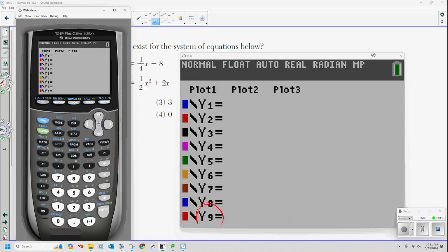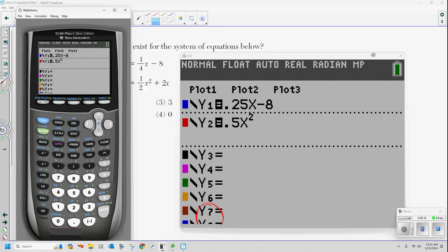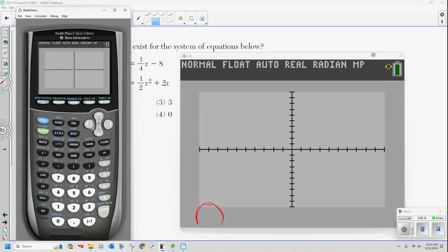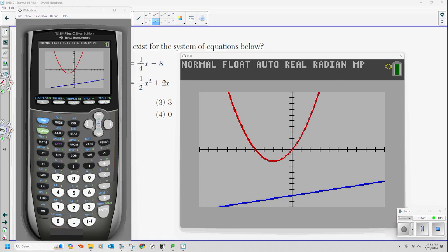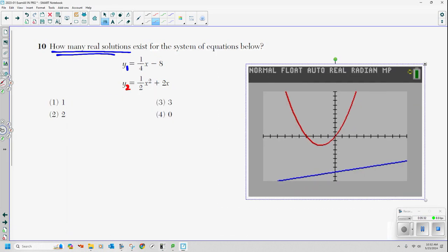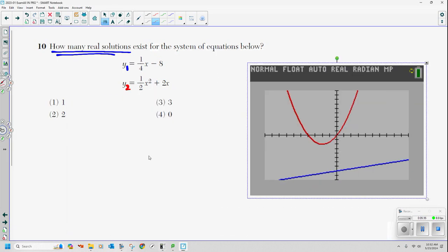How many real solutions exist for the system of equations below? I do not want to know what the solutions are. I just want to know how many real solutions. I could do this algebraically, but why bother? I'm going to put this in y1, and I'm going to put this in y2, and I'm going to count the number of times these intersect, because the solution is where they intersect. So let's go back here. Clear these bad boys out. And in y1, instead of 1 quarter, I'm going to put just 0.25. That's the same thing as 1 quarter. x minus 8. And instead of 1 half, I'm going to put 0.5, because that's the same as 1 half. x² + 2x. Let's graph this. You tell me how many intersection points you see. You know how many intersection points I see? Yeah, none. Zero.